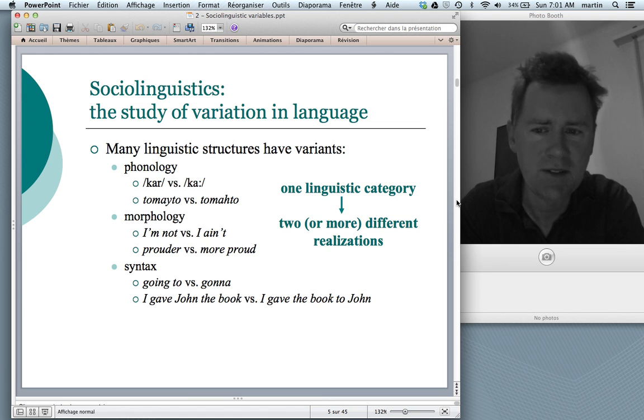In syntax, there's also variation. For instance, if we take the second example here, I gave John the book expresses the same thing as I gave the book to John. Both mean the same thing, but syntactically they're different. The word positions of the objects are different. And again, this is not something that would have social explanations, but rather it is something that has processing explanations or semantic explanations.